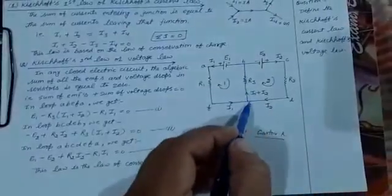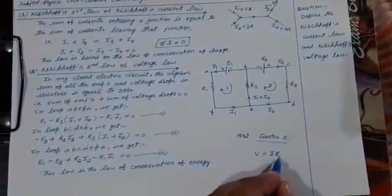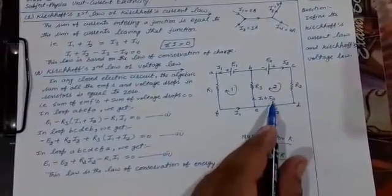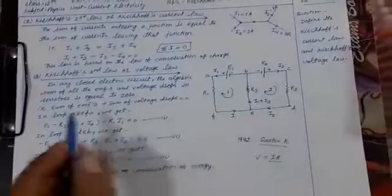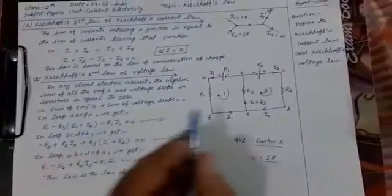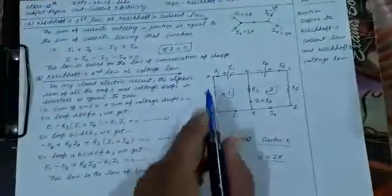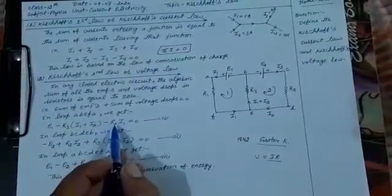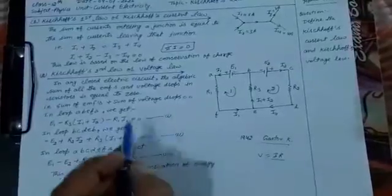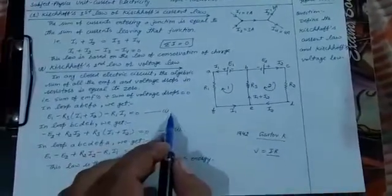Moving from B to E: if the traversal direction is opposite to the current direction, the potential drop V equals IR is negative. Here the current is I1 plus I2 and resistance is R3, so we get minus R3 times (I1 plus I2). Then from E to F and F to A: the current direction gives a negative voltage drop, so we write minus I1 times R1. The sum of all these terms equals zero — this is the first equation.